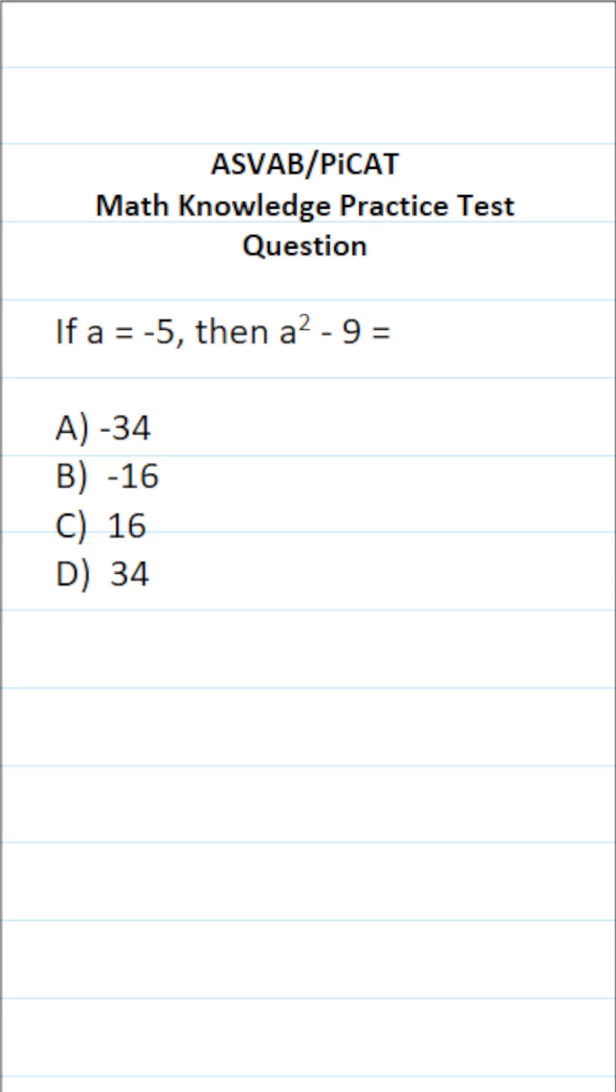This math knowledge practice test question for the ASVAB and PiCAT says if a equals negative 5, then a squared minus 9 equals. For this problem we're being asked to evaluate the expression a squared minus 9 when a equals negative 5.